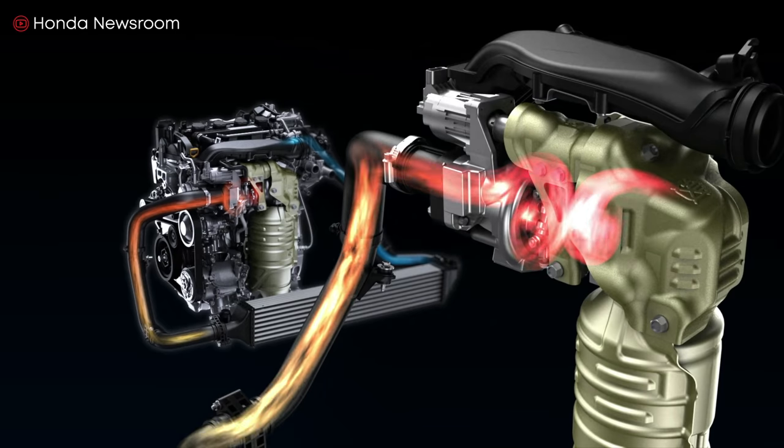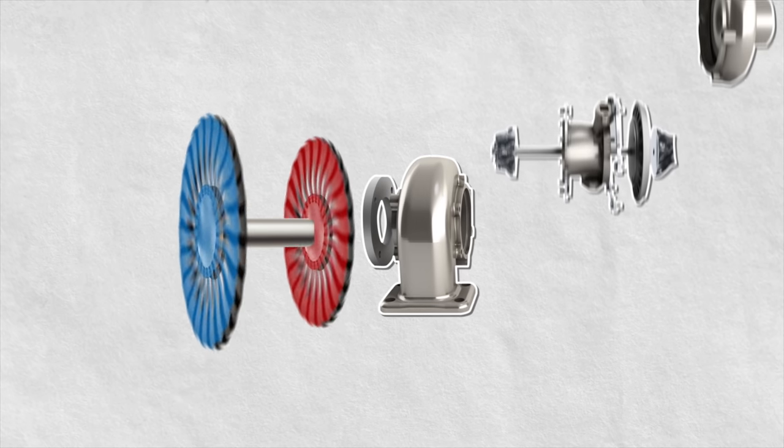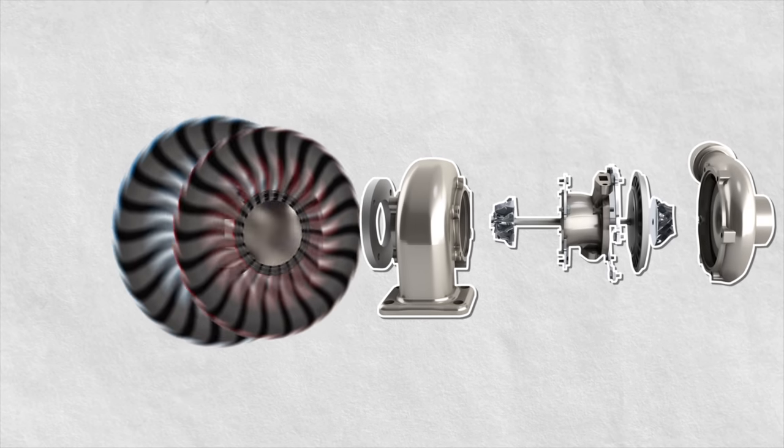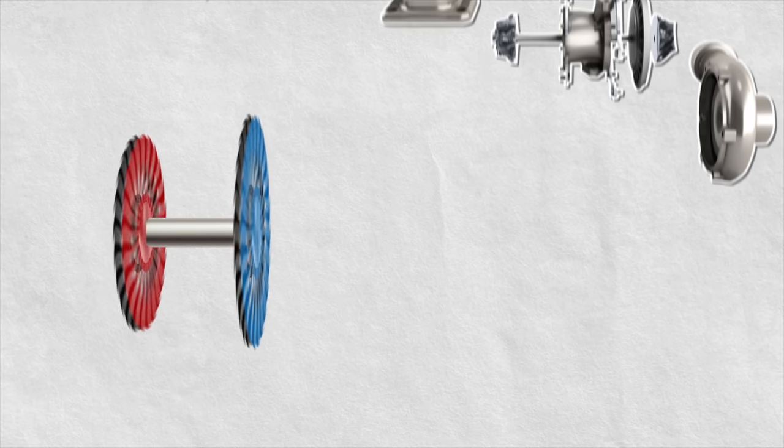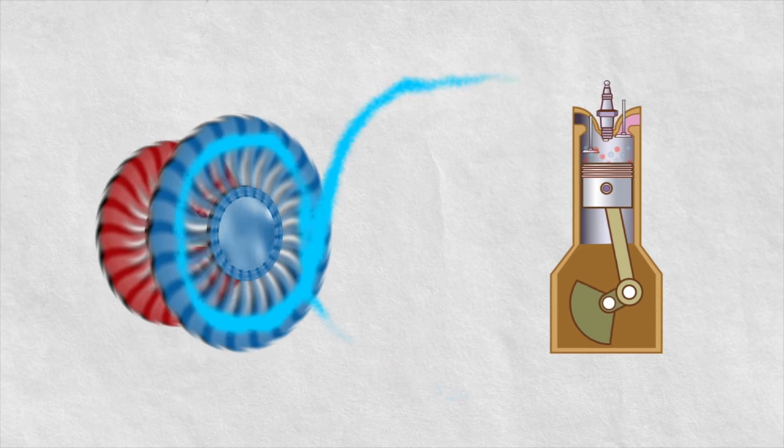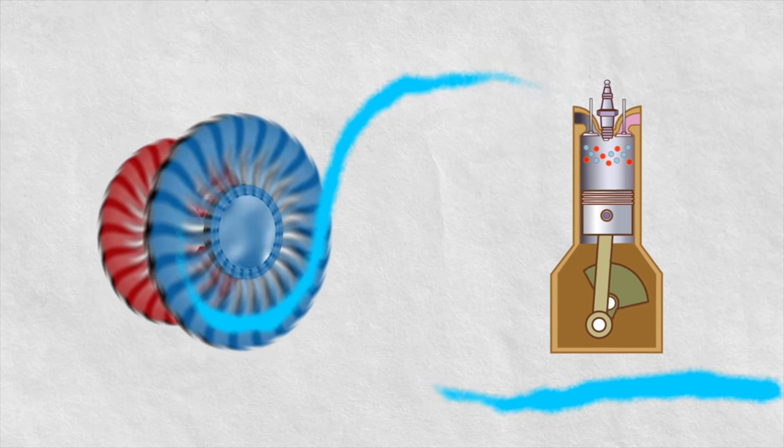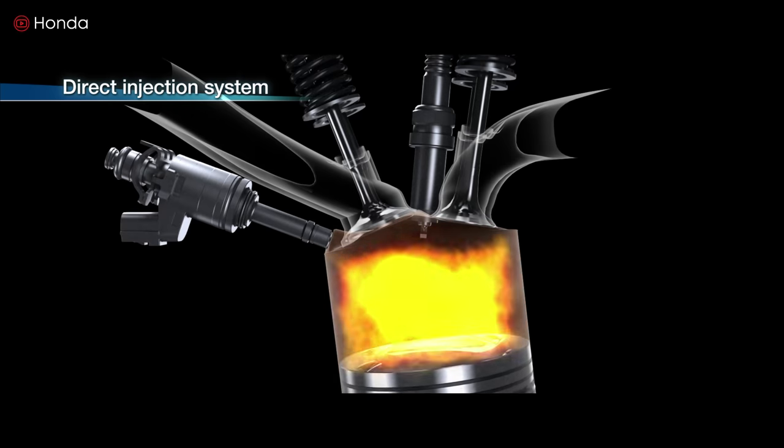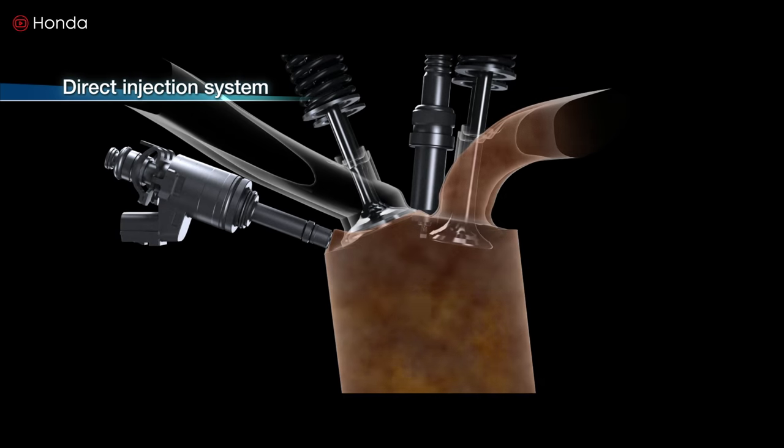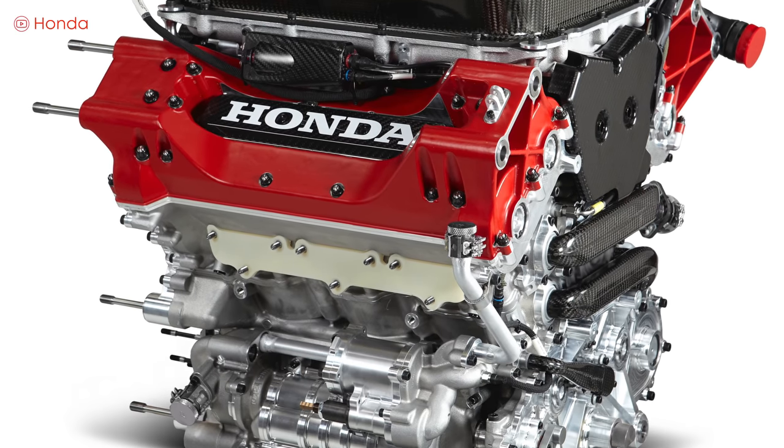When the engine exhaust rotates the turbine blades, the compressor impeller blades also automatically rotate since they're on the same axis. Outside air is pulled in by the compressor impeller towards the engine cylinders for combustion. A very powerful explosion occurs in the combustion chamber, making the piston turn the crankshaft with greater force, and that's how even a small engine can have high power.